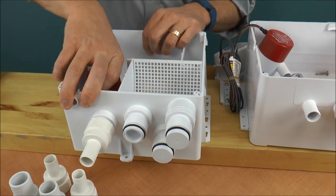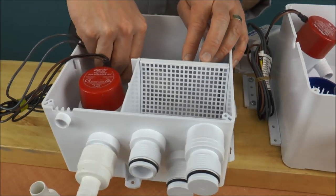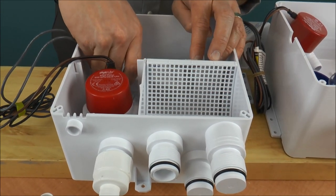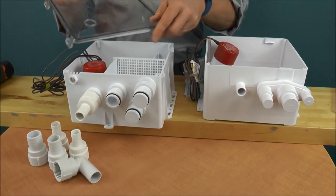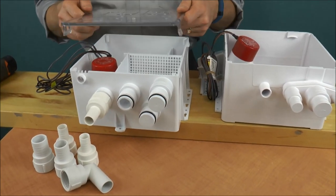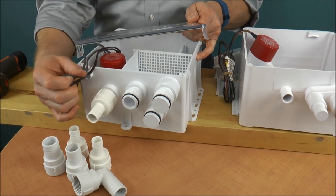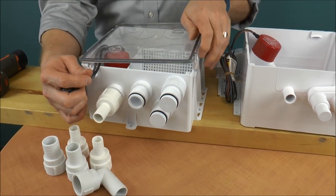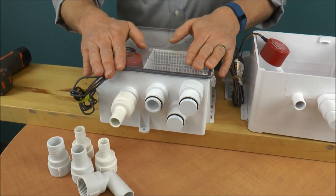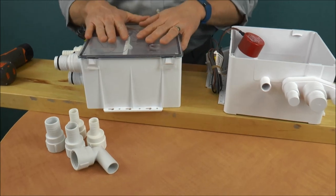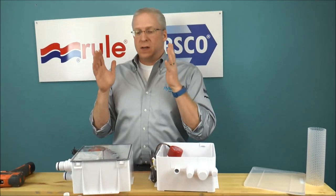Pump gets snapped in. Switch goes in. And the new lid with the Rule logo on it can go either way. Kind of wiggle the wires into place, snaps down, and you're good to go. There you go, you're all back together.